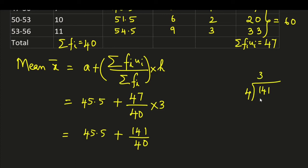141 divided by 4 we get, 4 3s are 12, 21, 4 5s are 20, 1 point here, 0. So it becomes 10, 4 to 8, then 20.